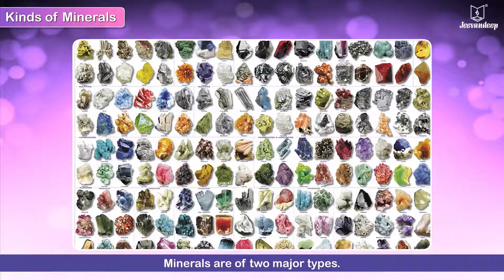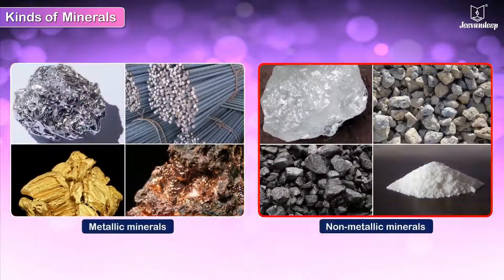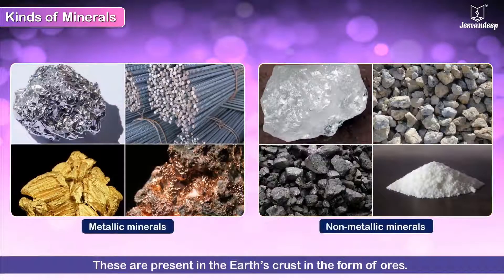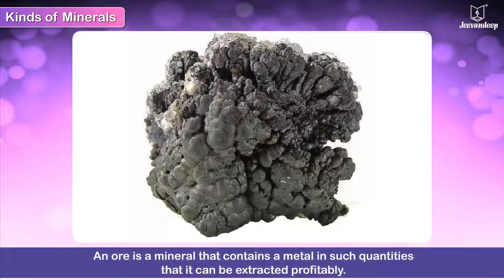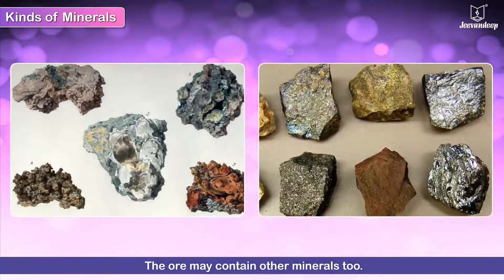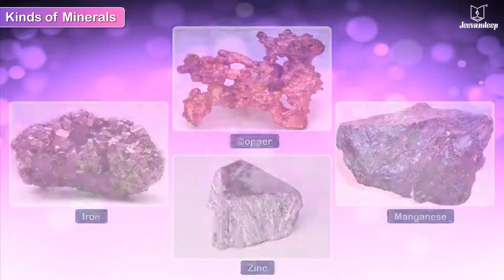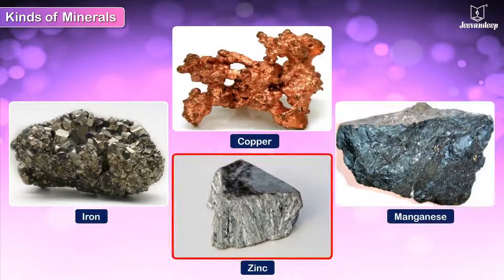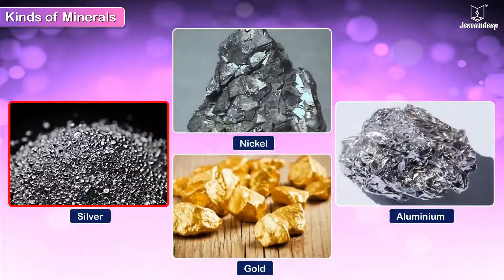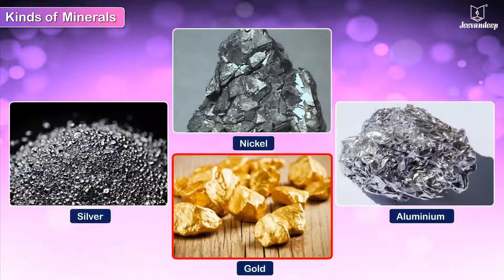Minerals are of two major types: metallic minerals and non-metallic minerals. Metallic minerals are present in the earth's crust in the form of ores. An ore is a mineral that contains a metal in such quantities that it can be extracted profitably; the ore may contain other minerals too. Metallic minerals are minerals from which metals are extracted. Iron, copper, manganese, zinc, silver, nickel, aluminium, and gold are examples of metals extracted from different metallic minerals.